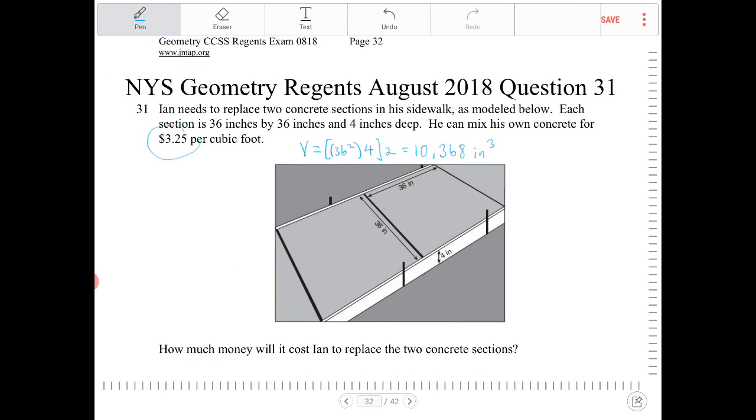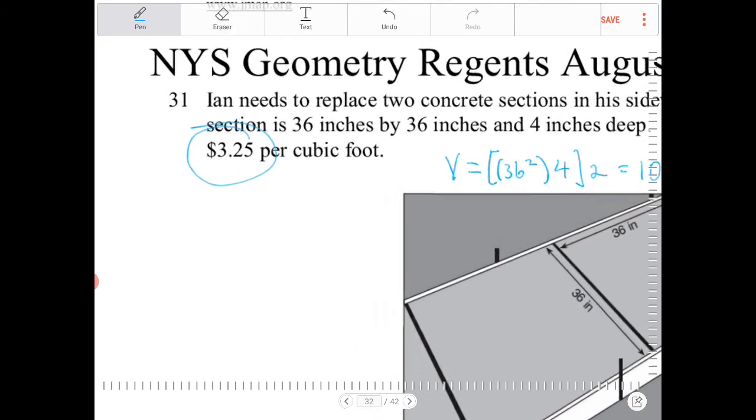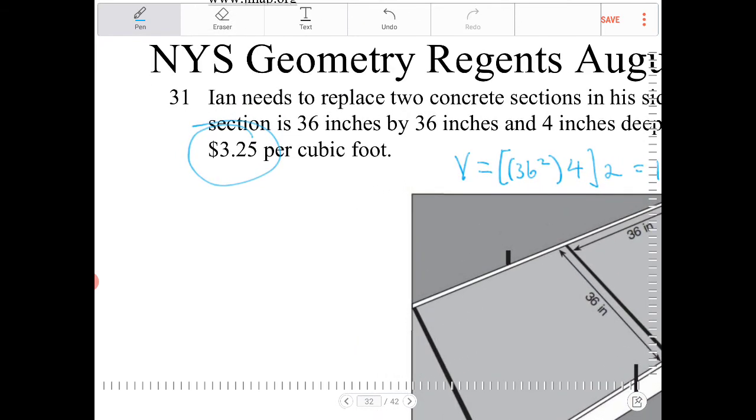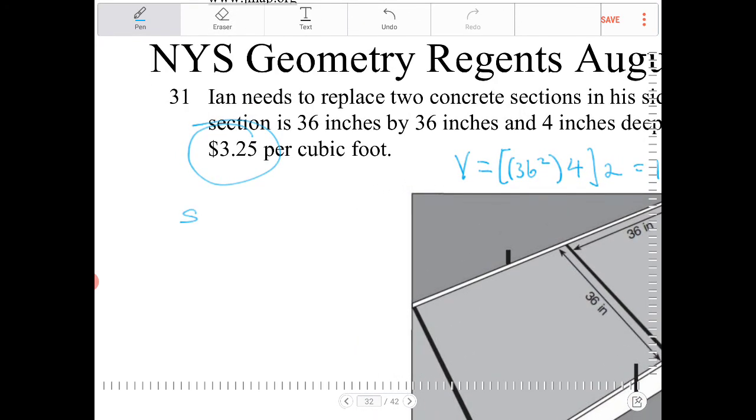Notice here that the price of the concrete is $3.25 per cubic foot. So 1 cubic foot is equivalent to how many cubic inches? 1 cubic foot is equivalent to 12 inches to the 3rd, right?